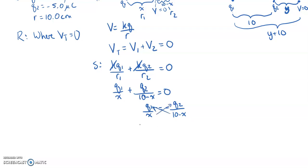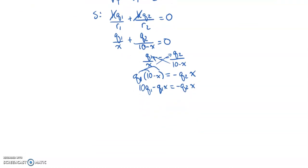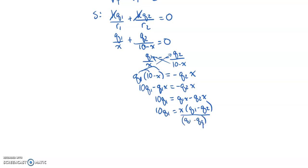Cross-multiplying while keeping the negative out front: q1 times (10 minus x) equals negative q2 times x. Expanding: 10·q1 minus q1·x equals negative q2·x. Adding q1·x to both sides: 10·q1 equals q1·x minus q2·x. Common factoring the x: 10·q1 equals x times (q1 minus q2).